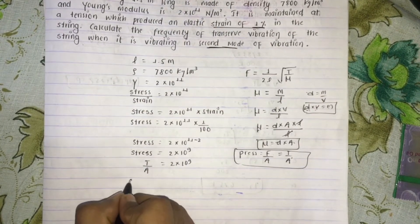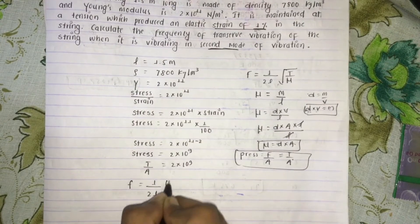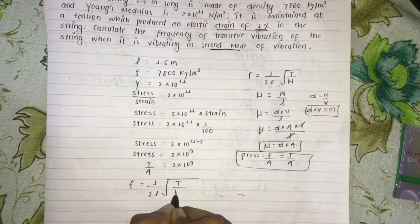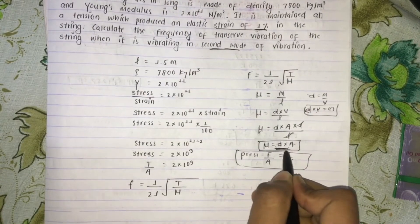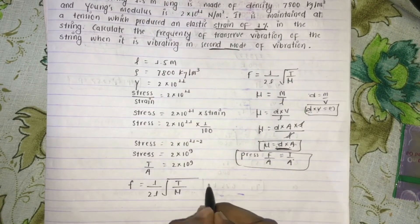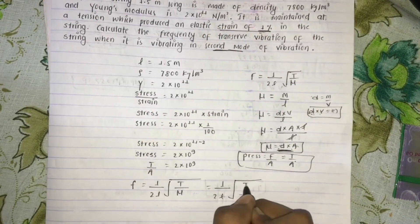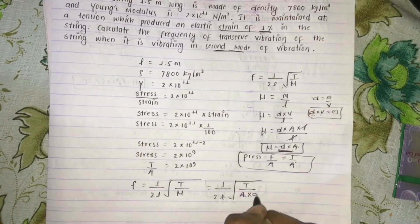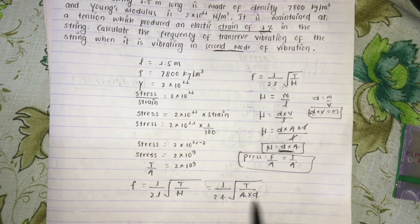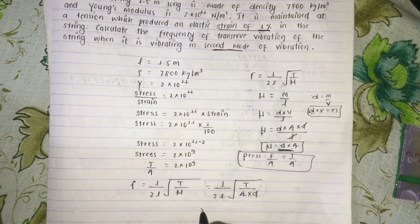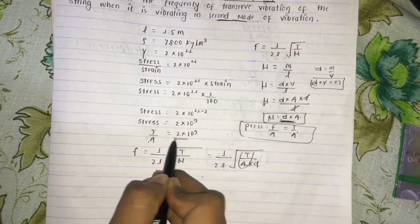The frequency formula becomes f equals 1 by 2L times root of tension by mu. Since mu equals density into area, this modifies to f equals 1 by 2L times root of tension divided by area into density, which simplifies to root of T by A divided by density.